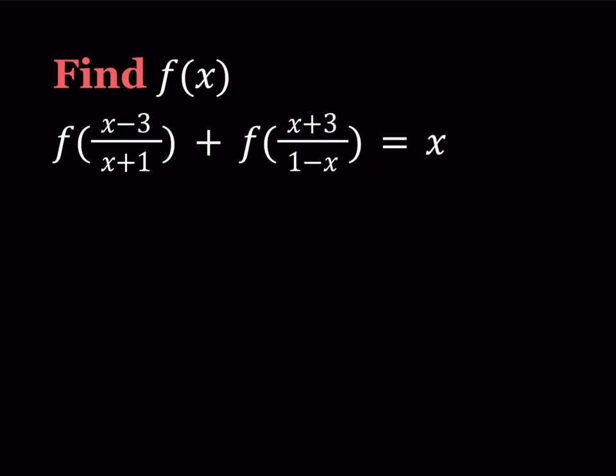We have the equation f of (x minus 3) over (x plus 1) plus f of (x plus 3) over (1 minus x) equals x, and we're supposed to find f of x. We have certain conditions here — x cannot equal negative 1 and x cannot equal positive 1 either.